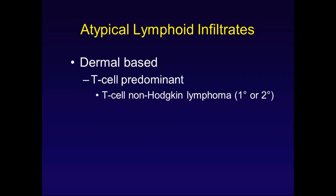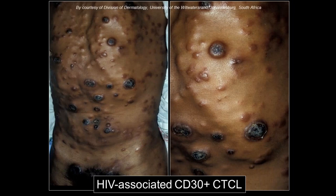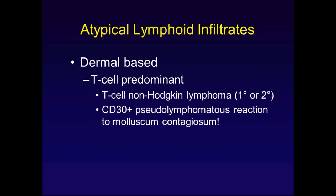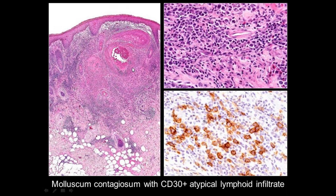If you encounter an atypical dermal lymphoid infiltrate that is T-cell predominant, obviously think of T-cell non-Hodgkin lymphoma, primary or secondary. Not all CD30-positive infiltrates in the skin are lymphomatous — you can see very striking pseudolymphomatous reactions to molluscum contagiosum with CD30 expression. A case sent as a consult as a CD30 positive lymphoproliferative disorder, on recutting and cutting deep into the block, turned out to be molluscum contagiosum. So it's important to do a sufficient number of serial sections.